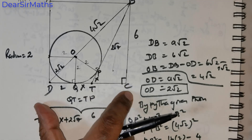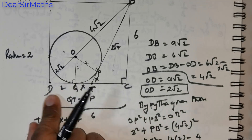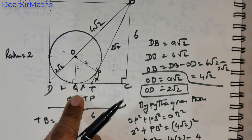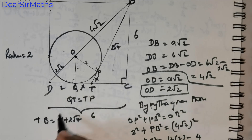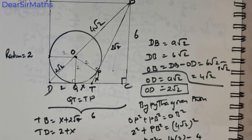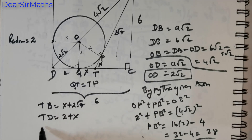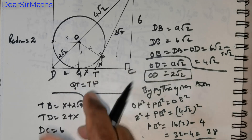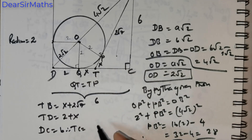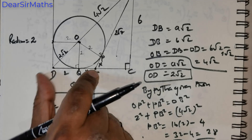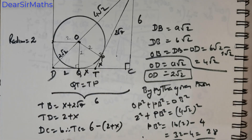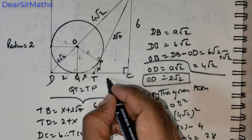Now for TC: to get TC, I have to subtract TD. What is TD? TD is 2 + X. What is DC? DC is 6 units. So TC = 6 - (2 + X), which is nothing but 4 - X. This is going to be my TC.